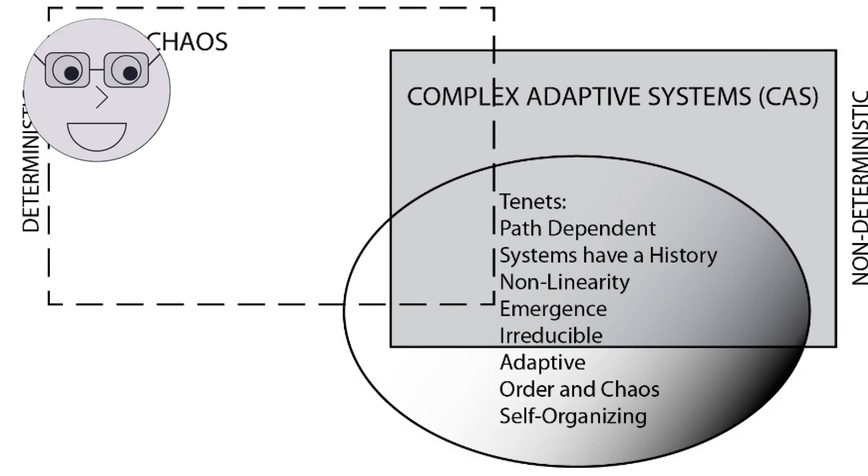Chaos theory has been applied to a wide range of fields, from weather forecasting to economics to biology. In each of these fields, chaos theory has helped researchers gain a deeper understanding of the underlying dynamics of complex systems.